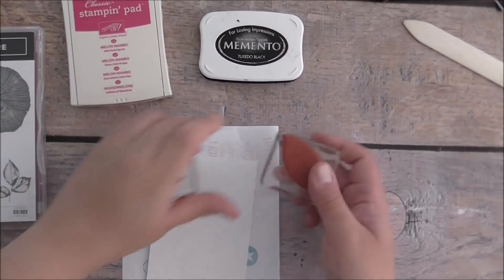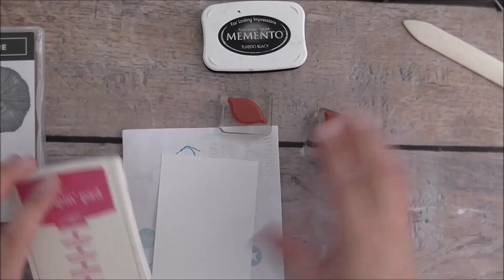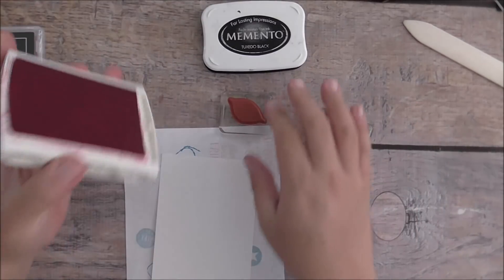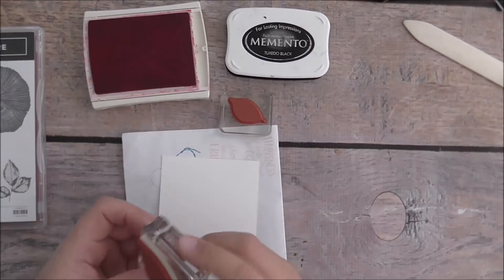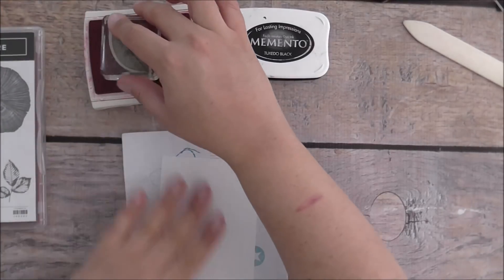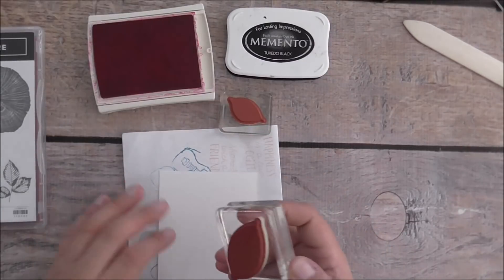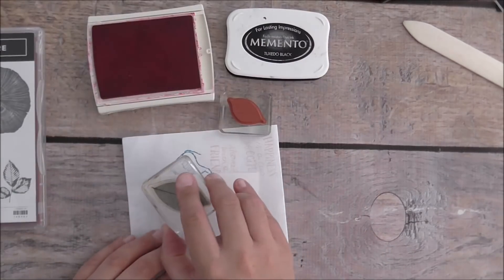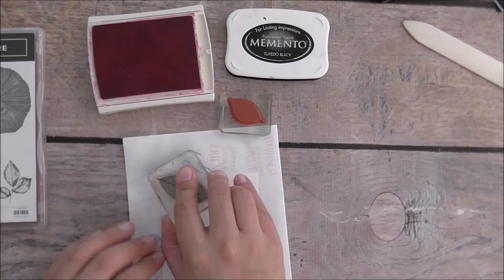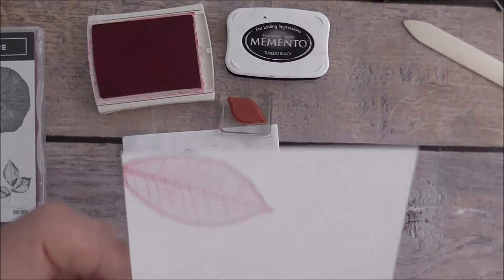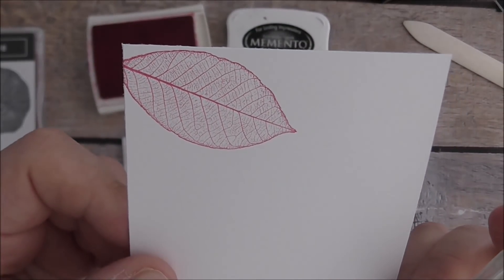I'll grab the leaves. With the big leaf I'm going to stamp that in Melon Mambo. I'll just do that mainly down the side there, stamp a little bit off the page. Look at that, that's how beautiful and delicate it looks. It's just stunning.